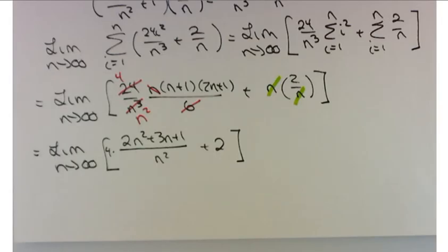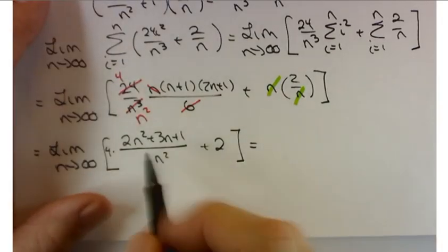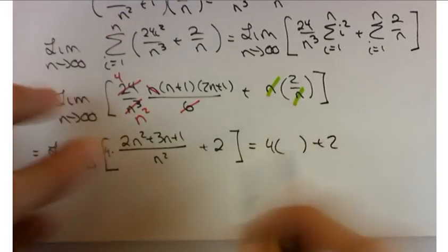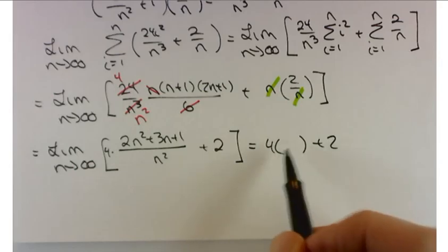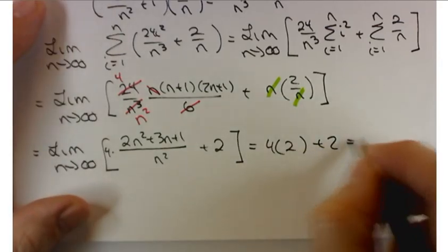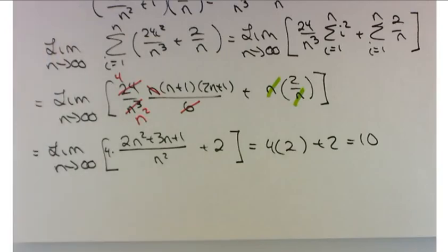Now, as far as the limit is concerned, I'm going to end up with 4 times something plus 2. What's that something there? 2. So overall, your area is 10.